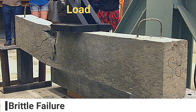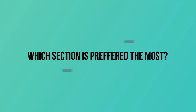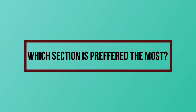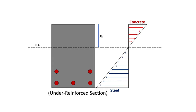Now coming to the main question: which one is the most commonly used section? The most preferred and commonly used section is the under reinforced section. The reason being that this is considered the safest and most economical section among all three sections.